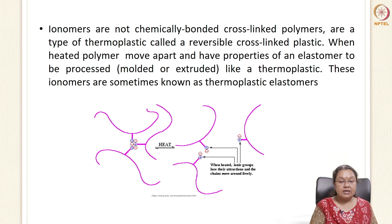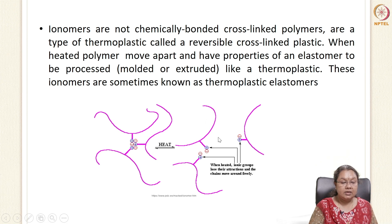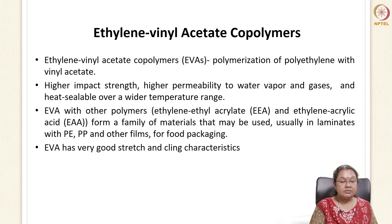Ionomers are not chemically cross-linked polymers but are a type of thermoplastic that have reversible cross-linking. In the stable form the ions are attracted to each other, but when heated the ionic groups lose their attraction and chains move apart; the valences are satisfied with the help of metal ions. These ionomers are also used for developing thermoplastic elastomers.